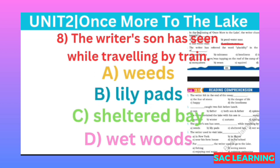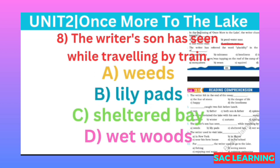Number eight: What has the writer's son seen while traveling by train? (Musnif ke bete ne train mein safar ke dauran kya dekha?) Option A: weird, B: really paid, C: sheltered by, D: wet wood. Correct option is B, really paid.